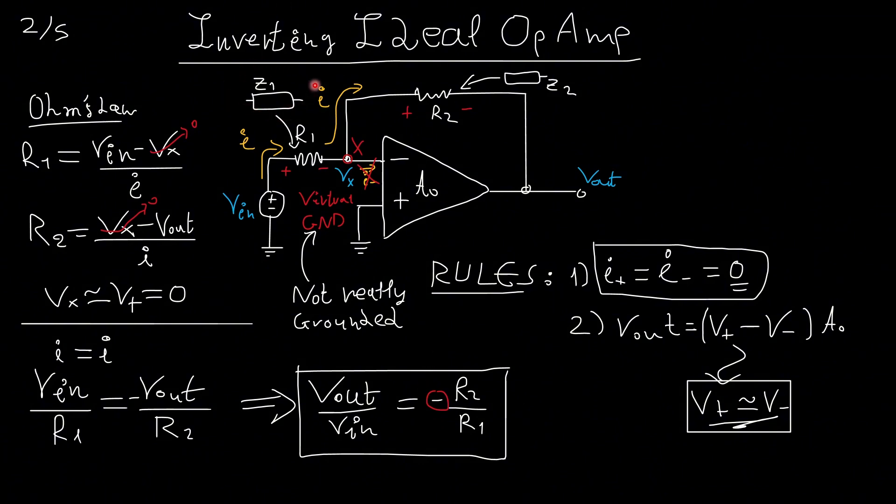Now, if we had an impedance here in general, Z1, and an impedance here, Z2, instead of resistors, again we would follow the same principles, and we would get this result, minus Z2 over Z1.